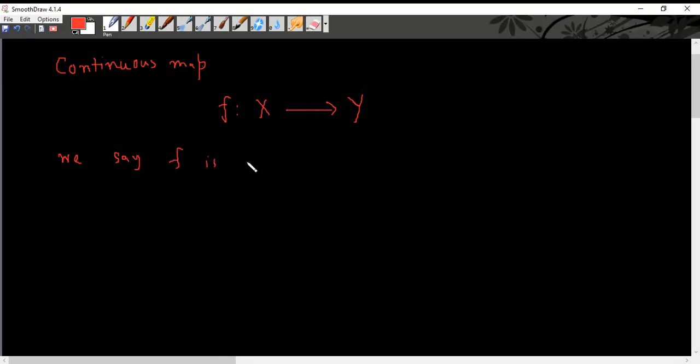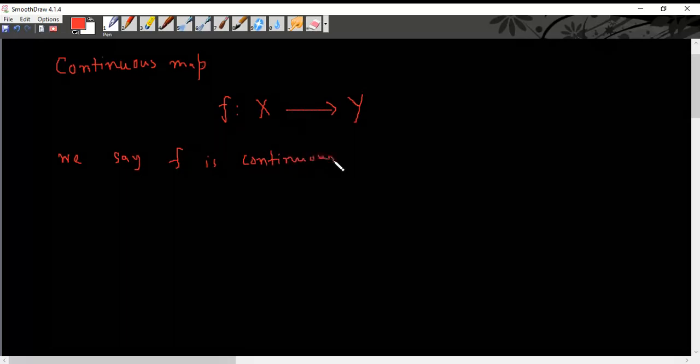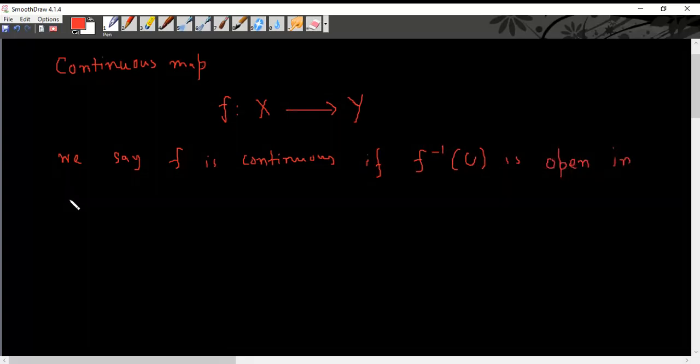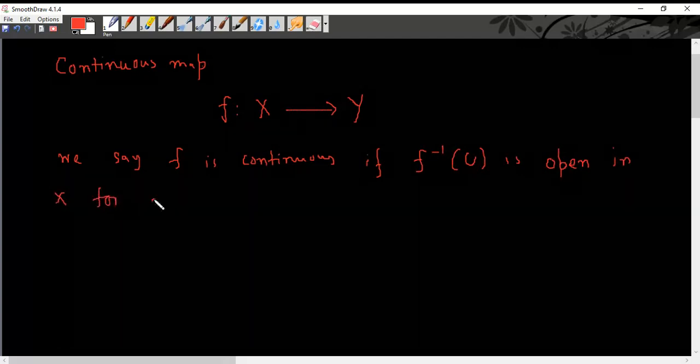We say f is continuous if the inverse of U is open in X for all open sets U of Y. So if this condition is satisfied for all possible open sets U such that f inverse of U is an open set in X, then we say that f is a continuous map.